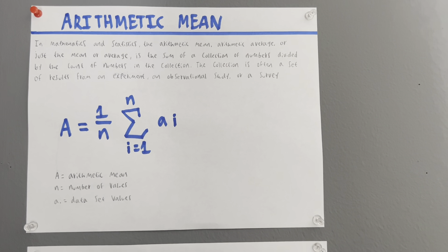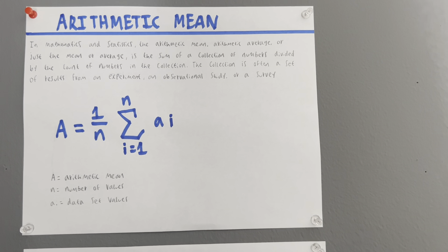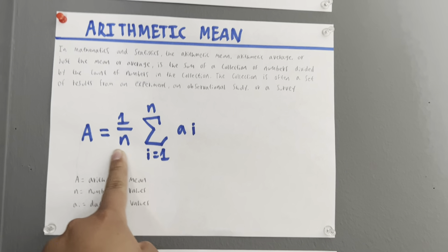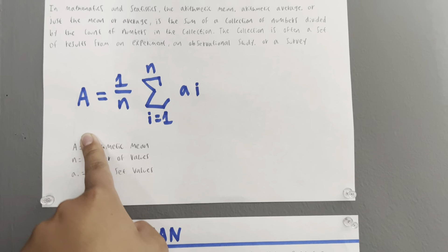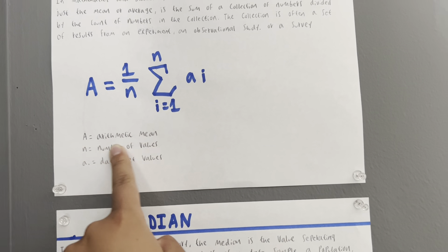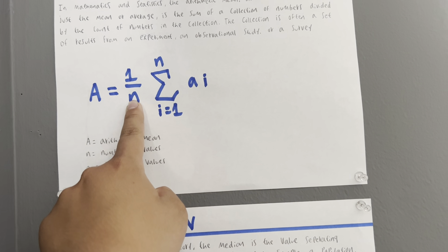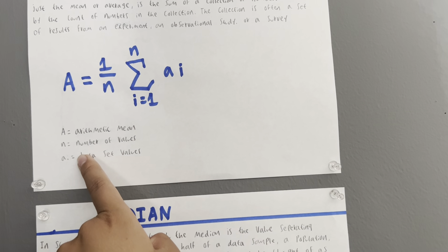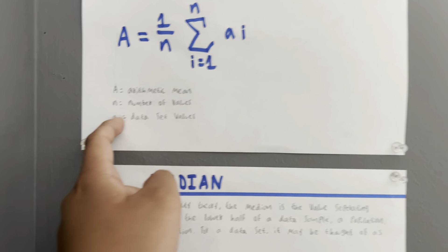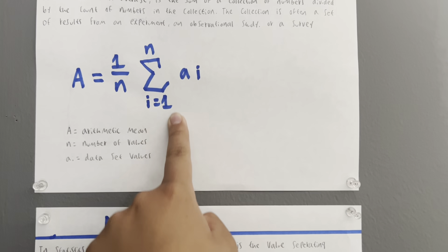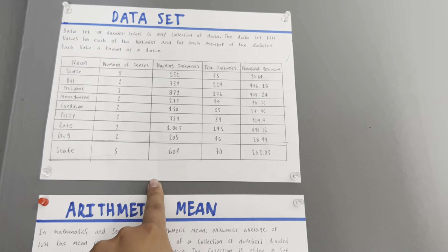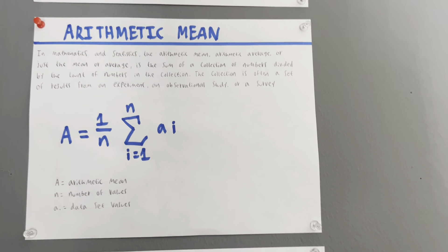The collection is often a set of results from an observational study or a survey. In the formula, A stands for the arithmetic mean — that's what we're talking about today — n stands for the number of values, which is the denominator, and A_i stands for the data set values. We talked about the data set last Tuesday.